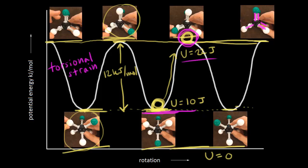In space, these bonding electron pairs are closer together in the eclipse conformation than they are in the staggered. In the staggered conformation, these electron pairs are further away from each other than they are in the eclipse conformation. We know that electrons will repel, so electron pair repulsions are greatest when the bonds are eclipsed — therefore that's higher energy. The electron pairs are further away from each other in the staggered conformation, and therefore it is more stable.